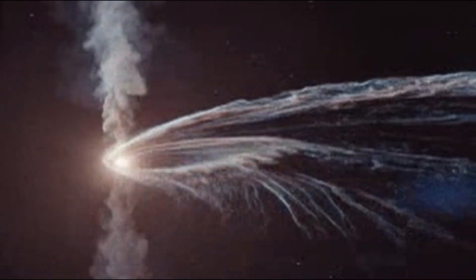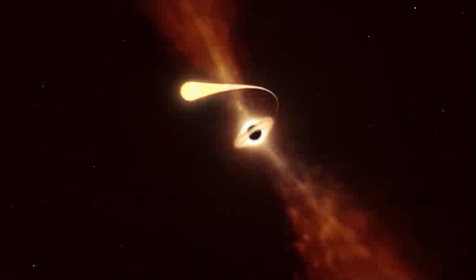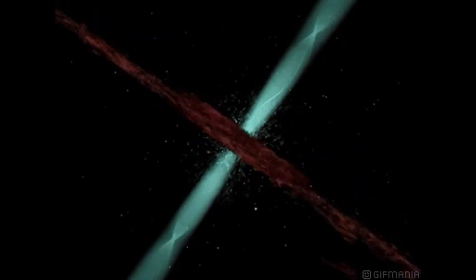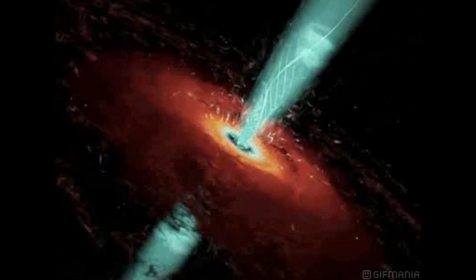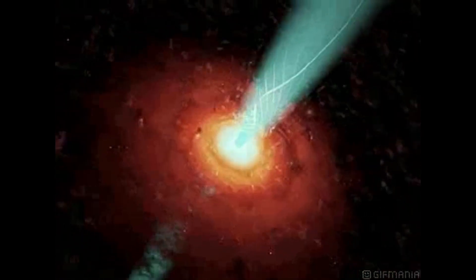However, the existence and properties of wormholes are purely speculative at this point, and their connection to white holes remains uncertain. It's important to emphasize that these hypotheses are still largely speculative and require further investigation and refinement. While theoretical models offer potential explanations for the origin of white holes, empirical evidence is currently lacking, making it challenging to ascertain their true nature and how they come into existence.